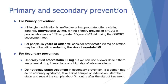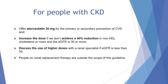We must not delay statin treatment in secondary prevention. If a person has acute coronary syndrome, we will take a lipid sample on admission, start the statin, and repeat the sample about three months after the start of treatment. For people with chronic kidney disease, we will offer atorvastatin 20 milligrams for the primary or secondary prevention of cardiovascular disease, and increase the dose if we don't achieve a 40% reduction in non-HDL cholesterol and the eGFR is 30 or more. If the eGFR is less than 30, we need to discuss the use of higher doses with a renal specialist.